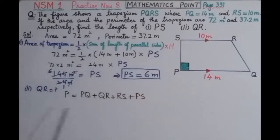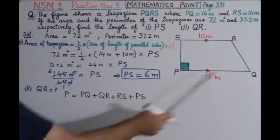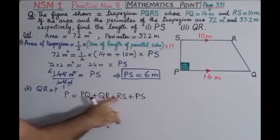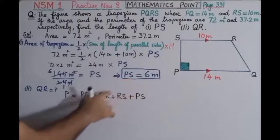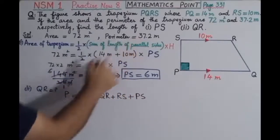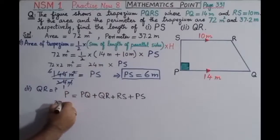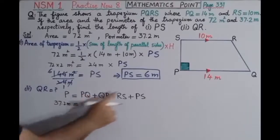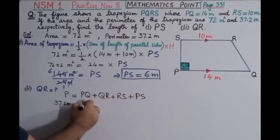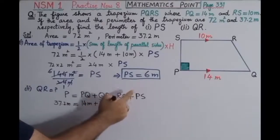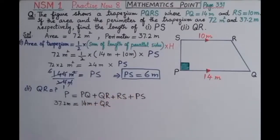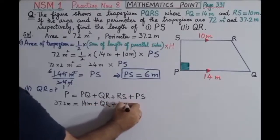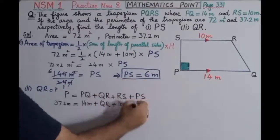We are finding QR, and we know the perimeter, PQ, RS, and PS — which we found in Part 1. Putting in the values: 37.2 meters equals PQ which is 14 meters, plus QR which we have to find, plus RS which is 10 meters.